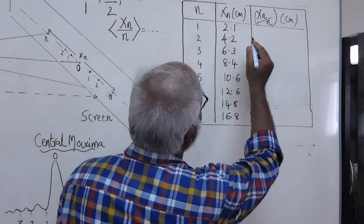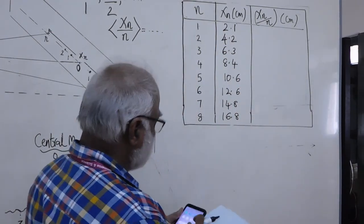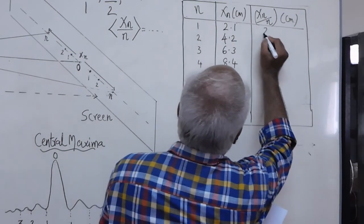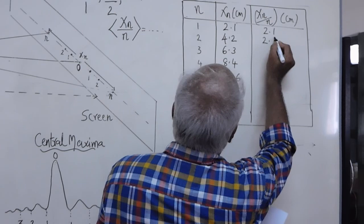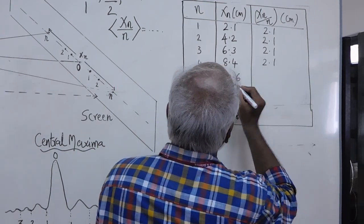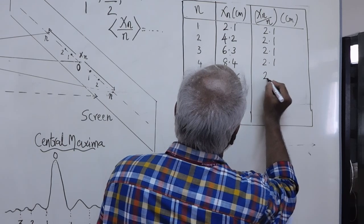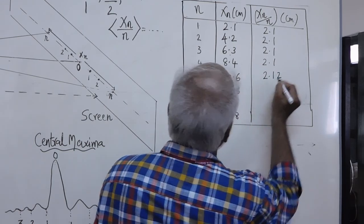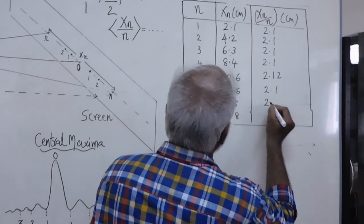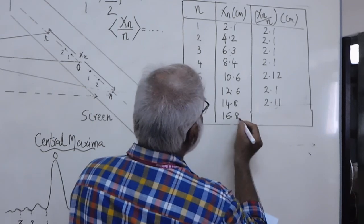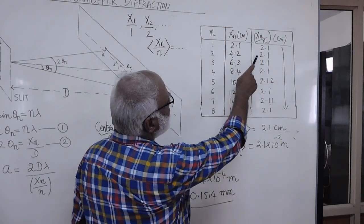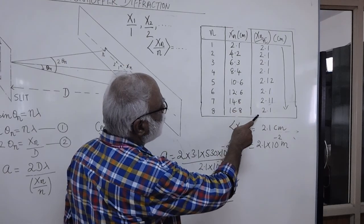Now we calculate the last column, xn divided by n. The values we obtain are: 2.1/1 = 2.1; 4.2/2 = 2.1; 6.3/3 = 2.1; 8.4/4 = 2.1; 10.6/5 = 2.1; 12.6/6 = 2.1; 14.8/7 = 2.1; and 16.8/8 = 2.1. We have a fairly consistent value of about 2.1 cm.